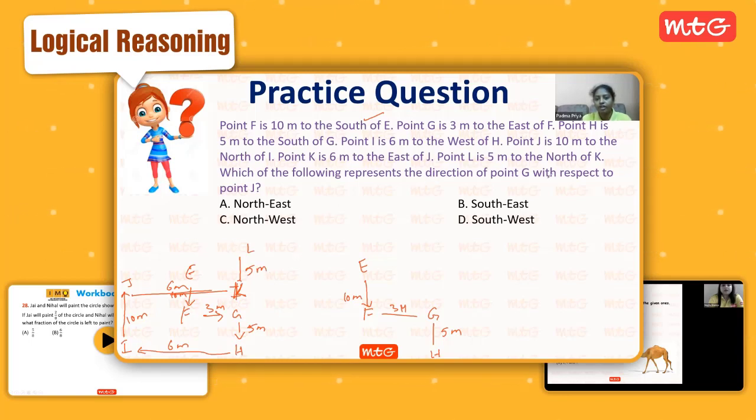Which of the following represents the direction from G to point J? G and J—G with respect to J means from J you should look at G. Here ten meters, after three meters, six meters you are going. When you are going six meters, automatically J is to the left part and G is to the direction of east. From J to G, when you look at the distance, here it is only five but here it is ten, so from top to bottom it is coming. This is south-east, so south-east is the answer.